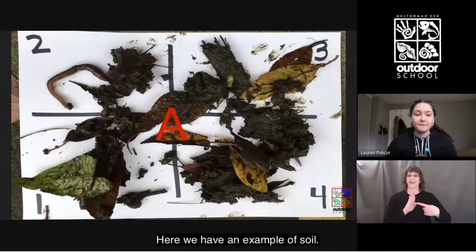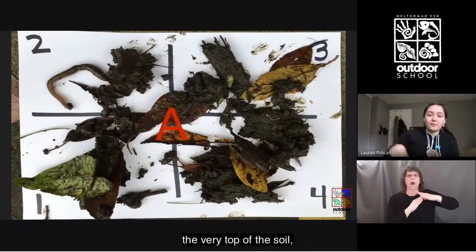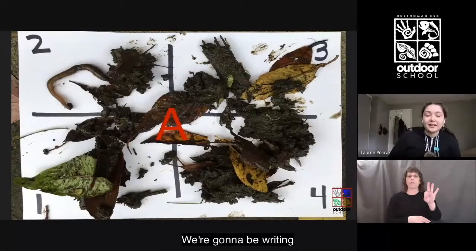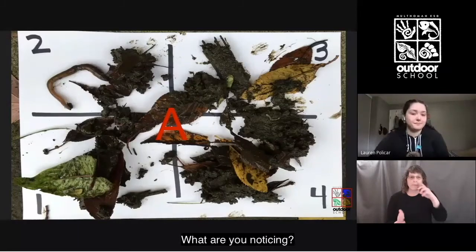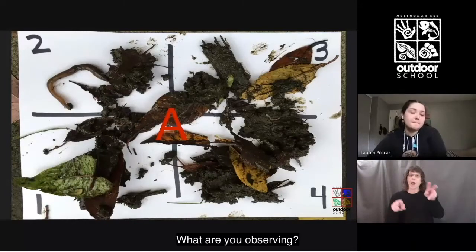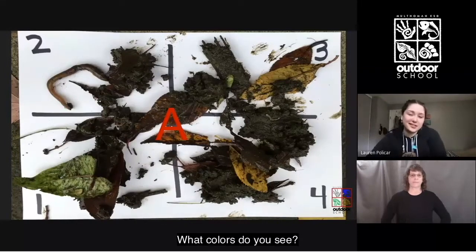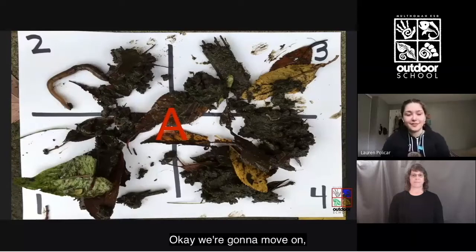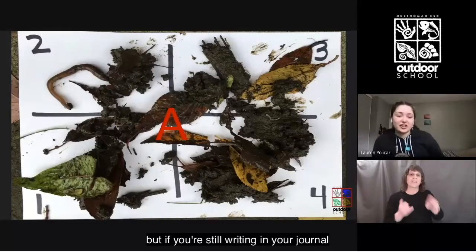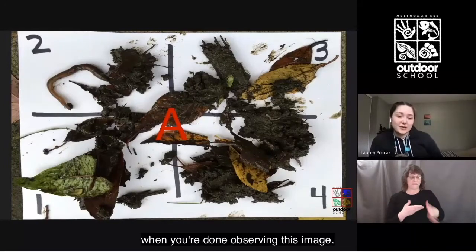Here we have an example of soil taken from the very top of the soil, which is called the duff layer. We're going to be writing some observations down on our whiteboards. What are you noticing? What colors do you see? Does it look wet? If you're still writing in your journal, that's totally fine — pause the video here and continue when you're done observing this image.